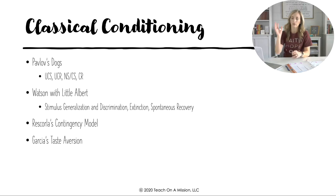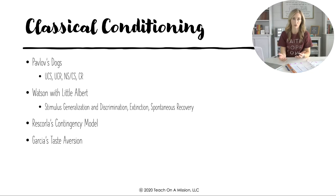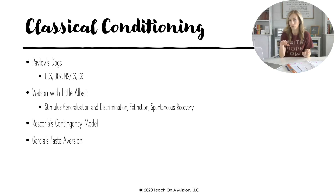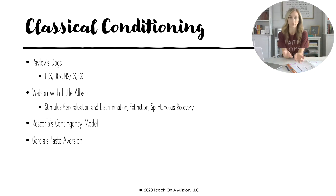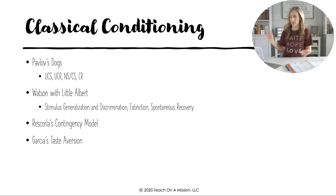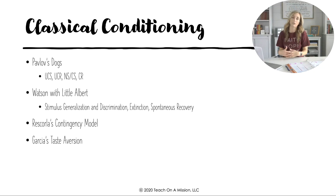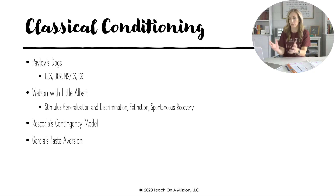Some things we can infer from Watson's study give us other vocab terms, including stimulus generalization and discrimination. When Little Albert moved away before he could be unconditioned, there was speculation: did he generalize his fear to white bunnies, Santa's beard, and big white clouds because they're white and fluffy like the mouse? Or did he discriminate and was only afraid of the mouse and not other similar but different stimuli?